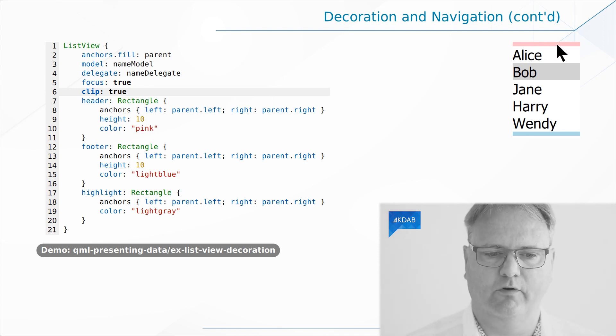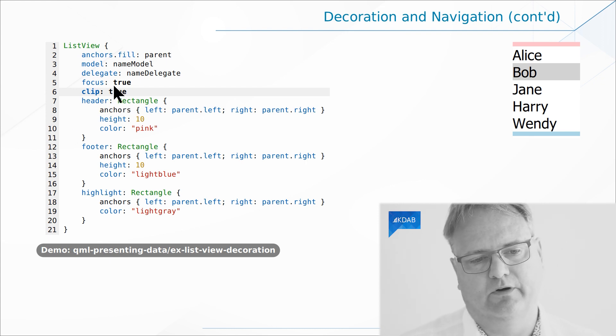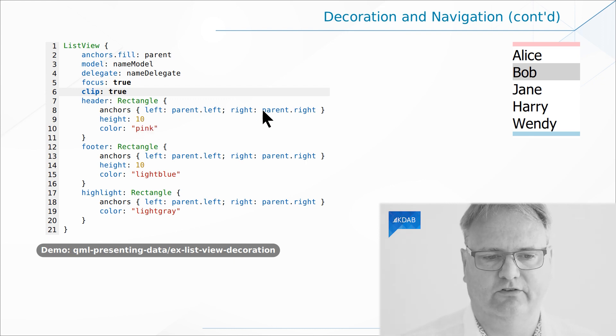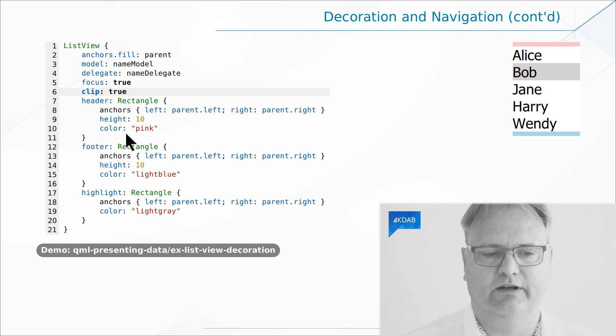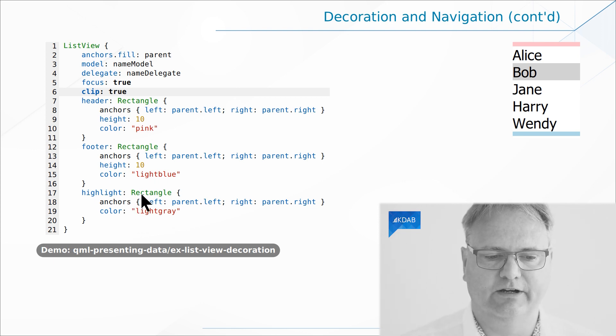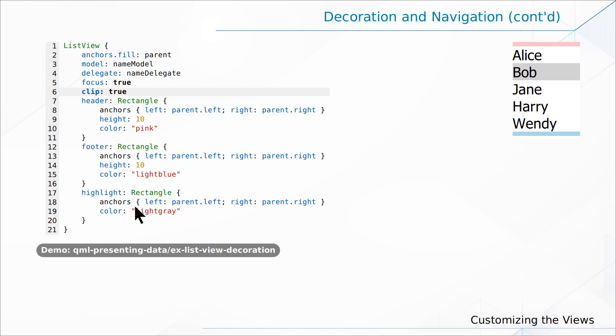Here's the header — the beautiful pink line at the top. It's an element for the header property, anchored left and right, with 10 pixels height and the color pink. The footer is the same: a rectangle, anchored, with a height and a color. Finally, there's the highlight, which is also a rectangle anchored left and right with a color — but I do not give it a height. ListView items don't need to be the same height, so the ListView itself sets the highlight's height to match the current item.